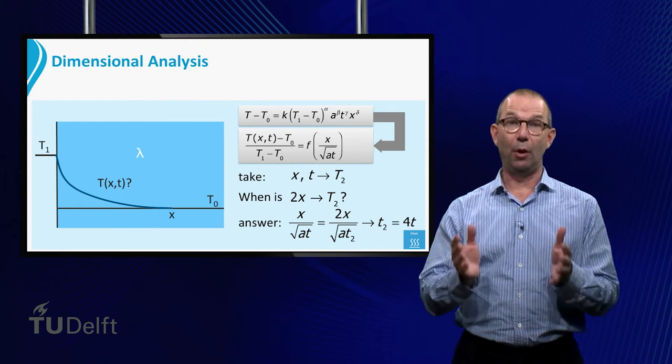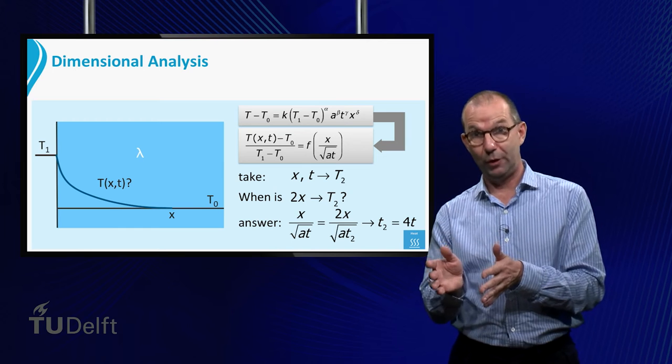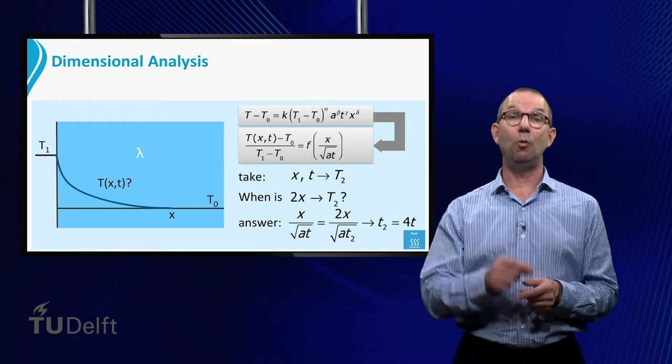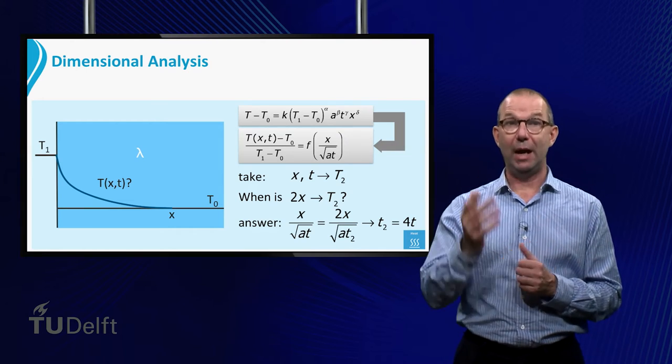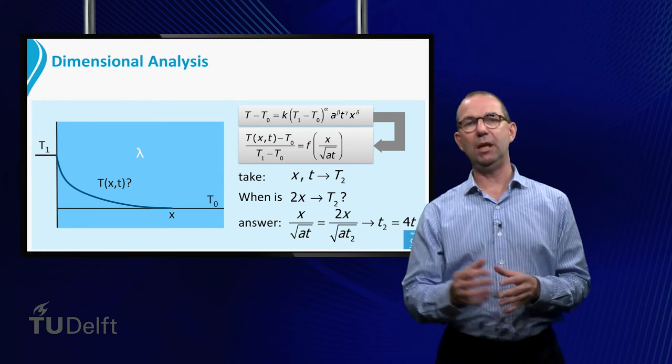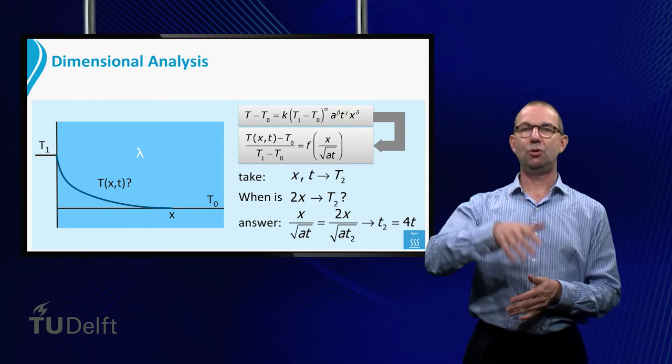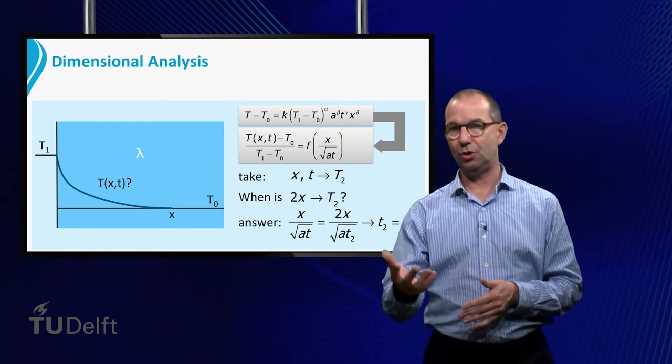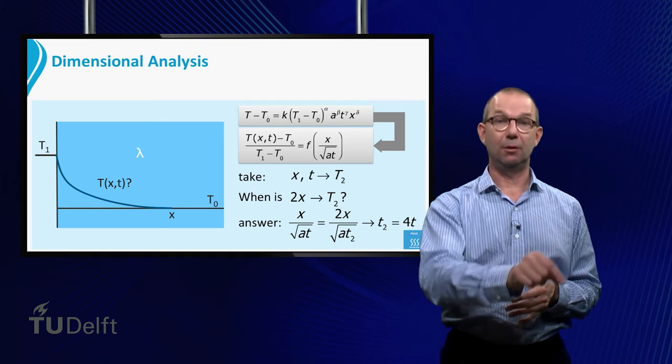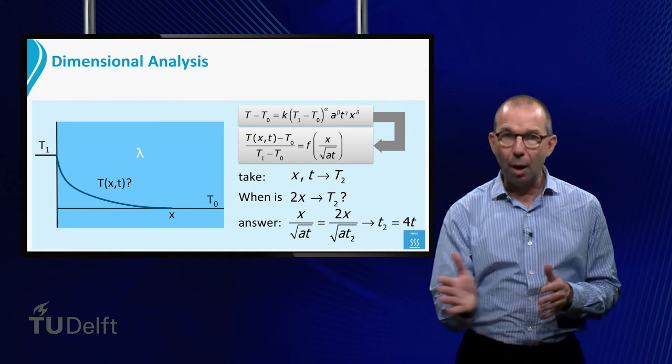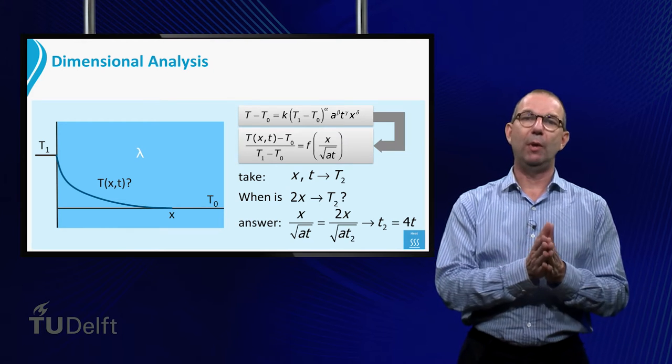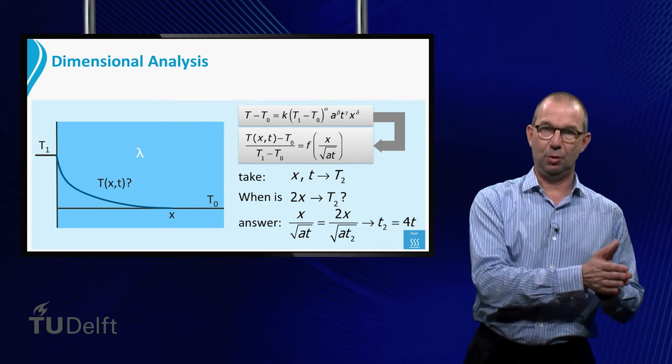Thus, we have for the original point that x over square root of AT must equal the ratio of the new point 2x over square root of A times the unknown time. From this we easily see that the point 2x will have a temperature T2 four times later. Thus indeed, as we anticipated, the warming up of the plate goes slower when going deeper and deeper into the plate.